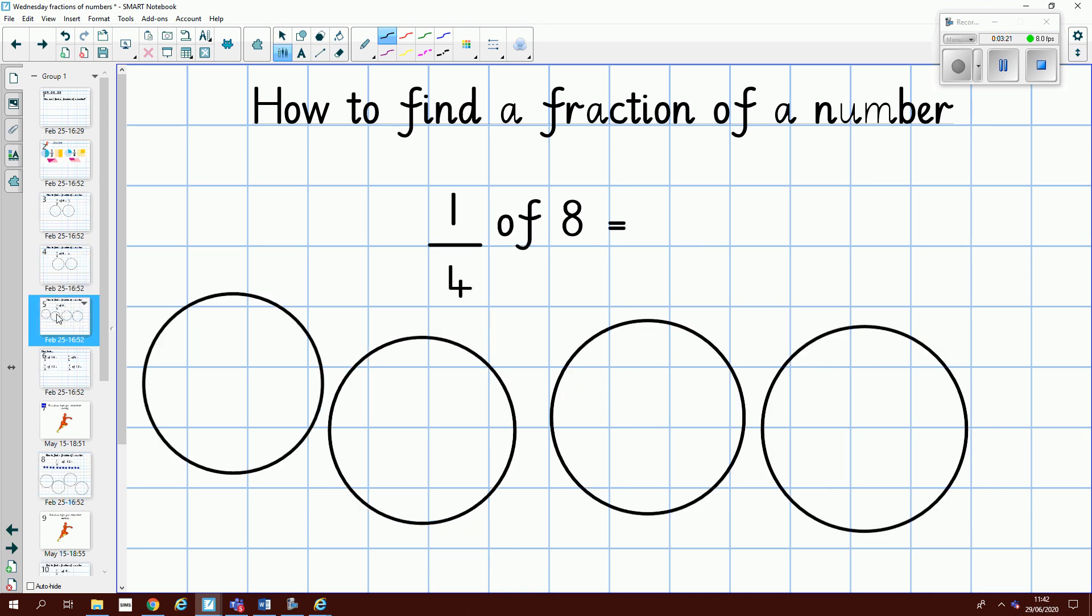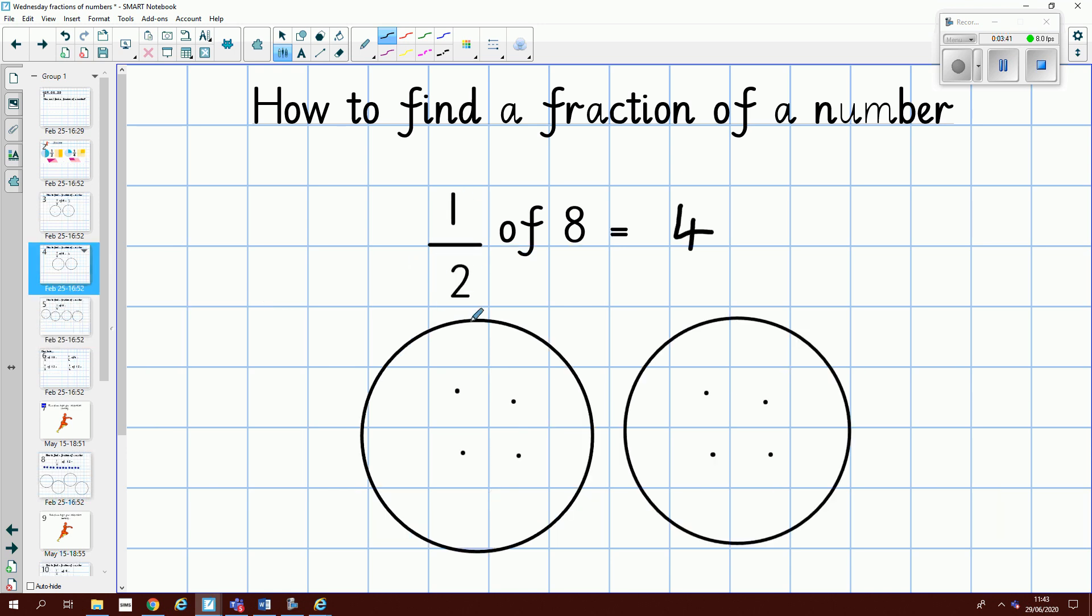Now, if I want to find what one quarter of a number is, can you now see the difference? My denominator is four. So I've got four groups. If I go back to my half, my denominator is two. So I have two groups.